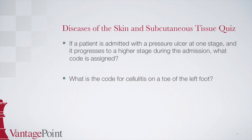Now it's time for our quiz. Our first question is: if a patient is admitted with a pressure ulcer at one stage and it progresses to a higher stage during the admission, what code is assigned? The second question is: what is the code for cellulitis on a toe of the left foot? You can pause the webinar to write down your answers and then hit play to find out if you were correct.